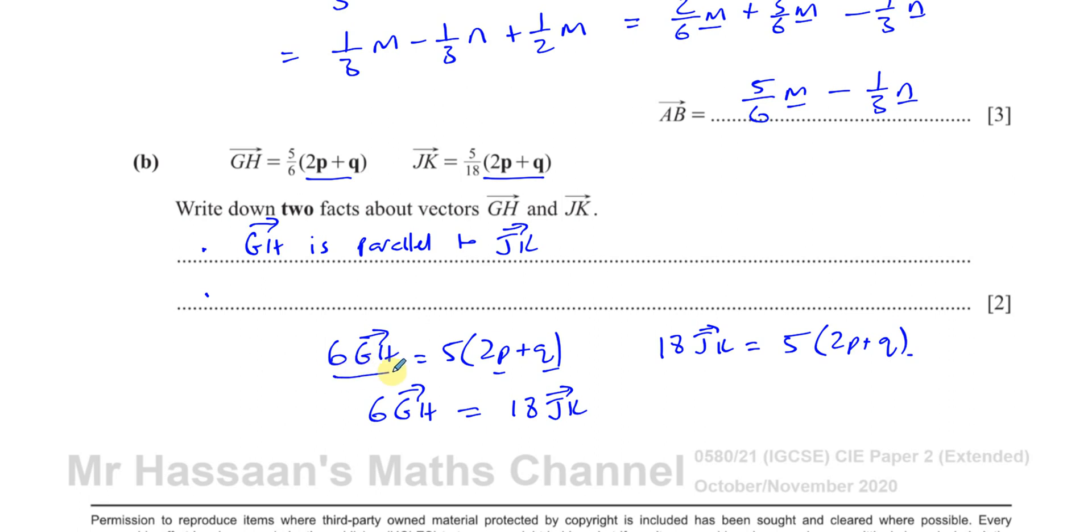Because six G to H is equal to something and eighteen J to K is equal to the same thing, these two things must be the same. Which means if I divide both sides by six, G to H is three times, because eighteen divided by six is three, times J to K. So we can say G to H is equal to three times J to K, three times the size of J to K. You could also write that G to H is longer than J to K, but here I think this is more complete if you can actually write down how much its magnitude is bigger. So G to H has a magnitude three times the magnitude of J to K.